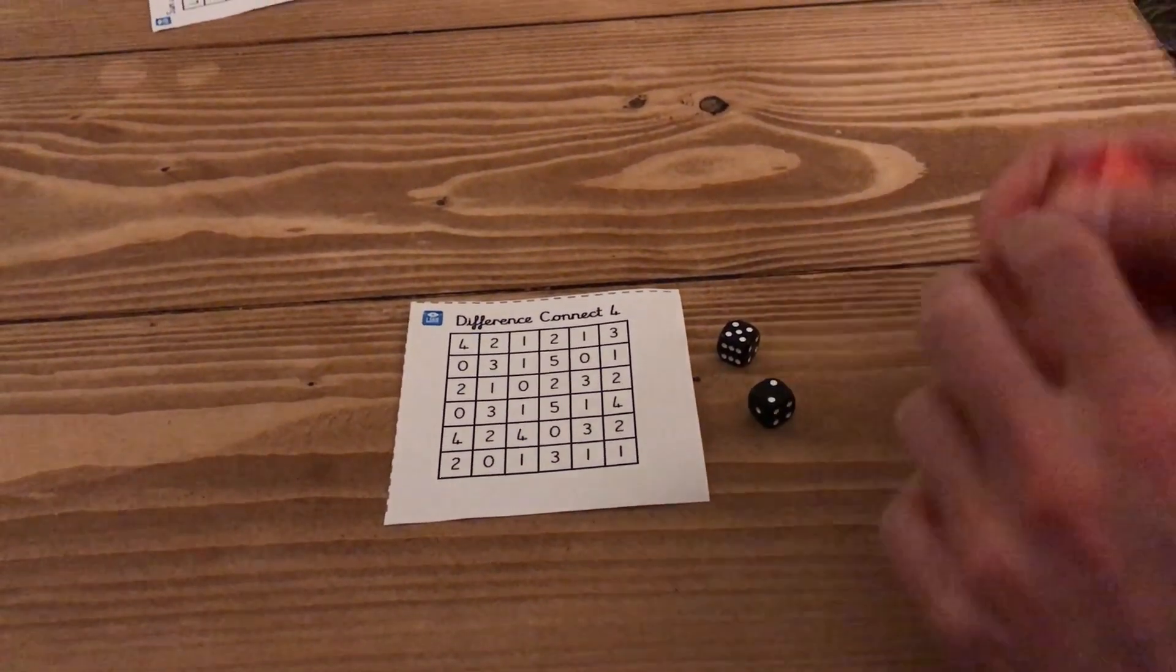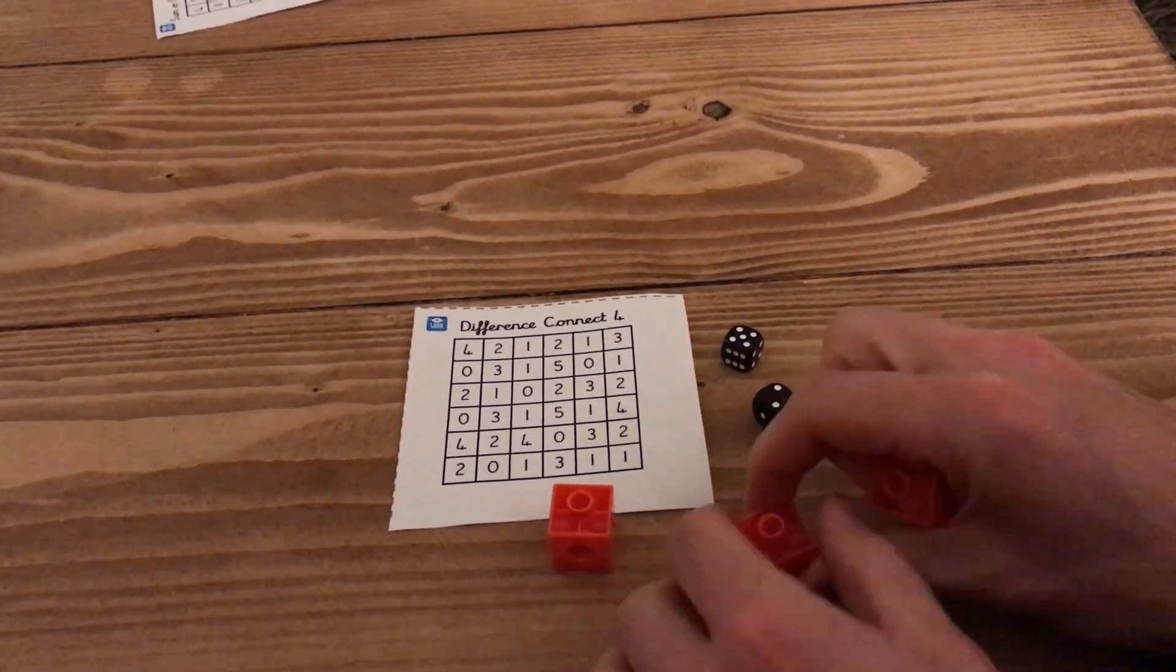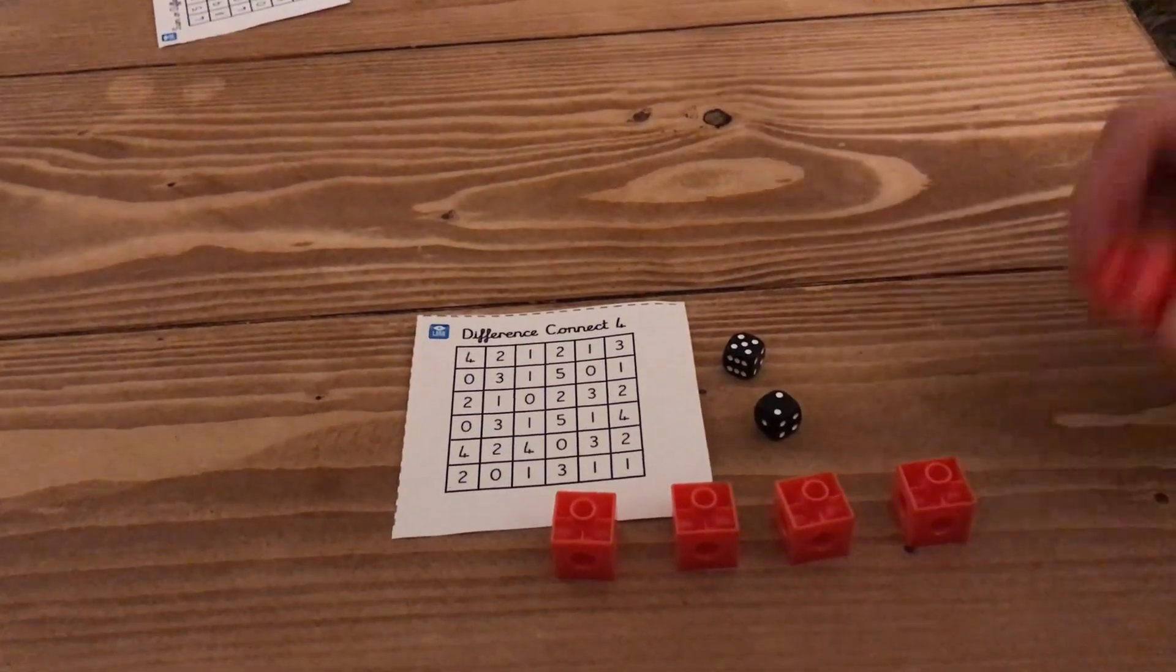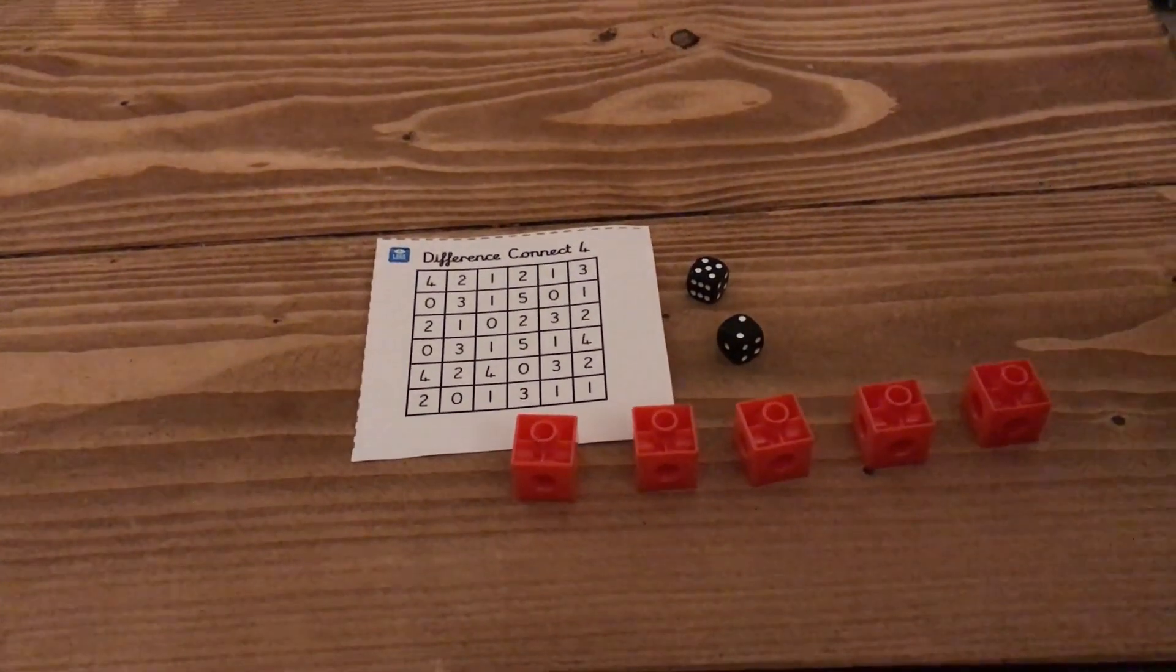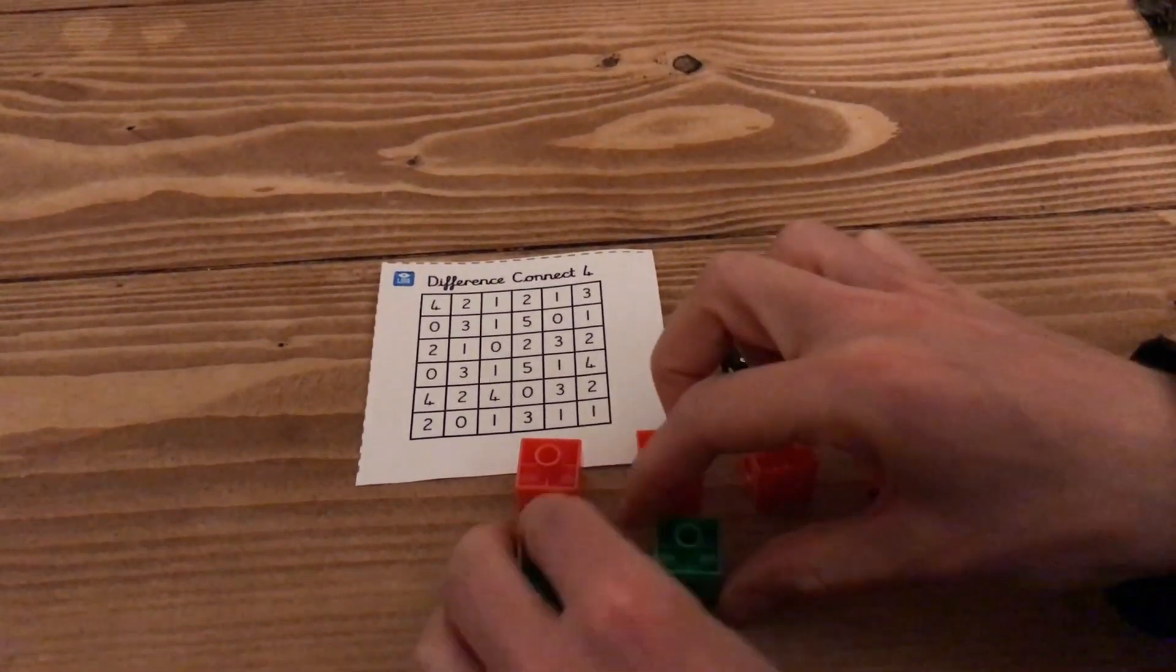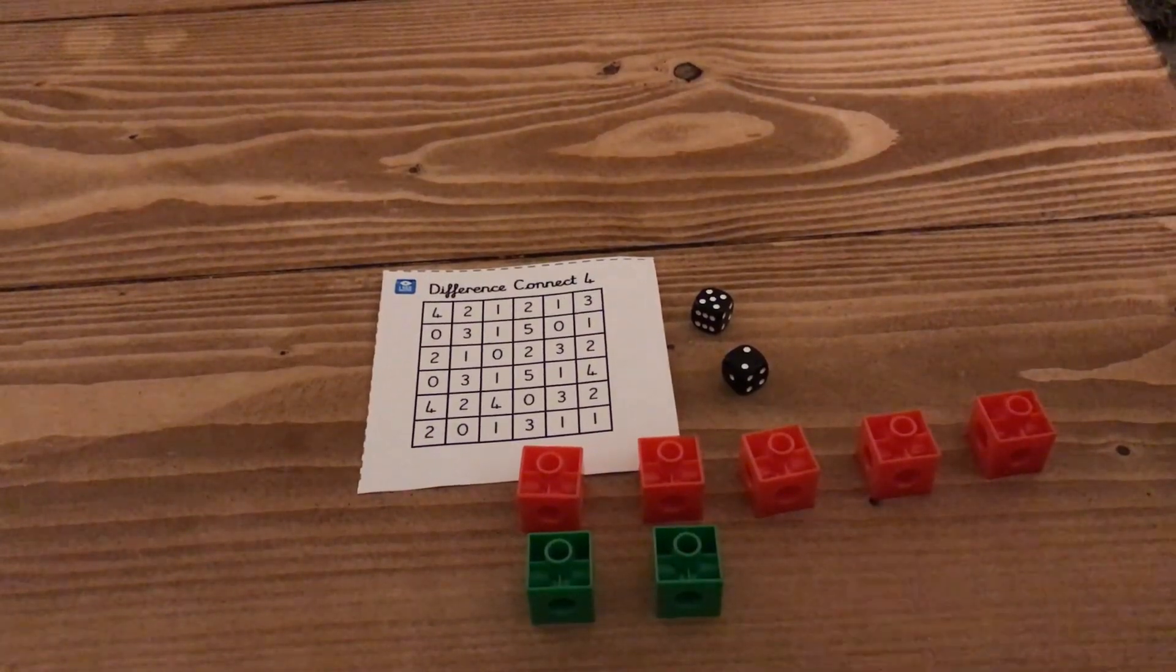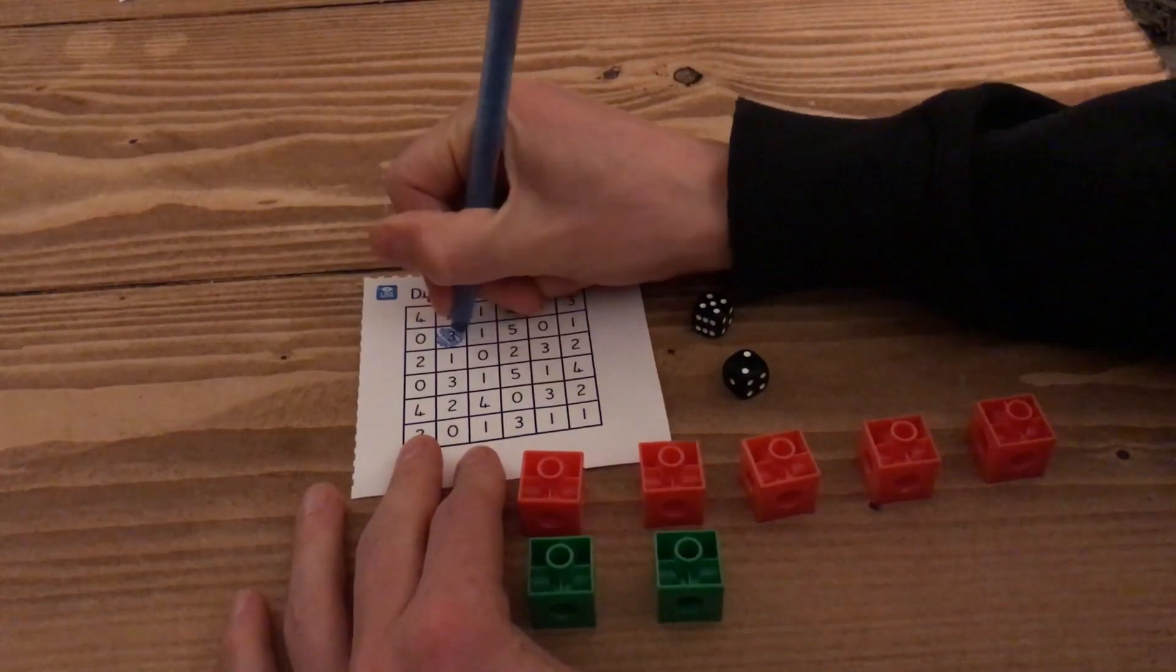So let's say if we roll a five and a two and we need help calculating that difference we might find objects to demonstrate that. So let's say five and then line up the two and so we can see the difference between five and two is three and then of course we just find a three on the grid and that's our square.